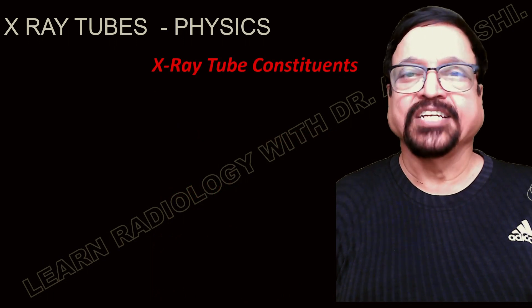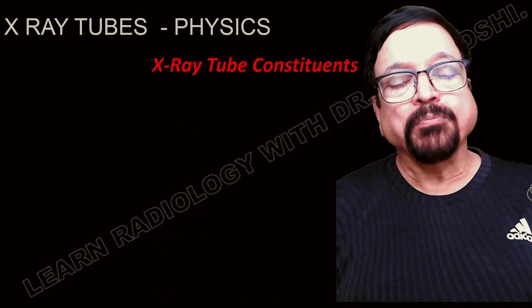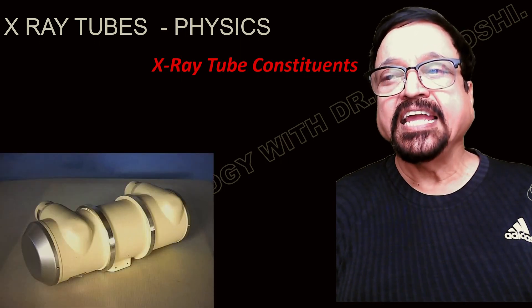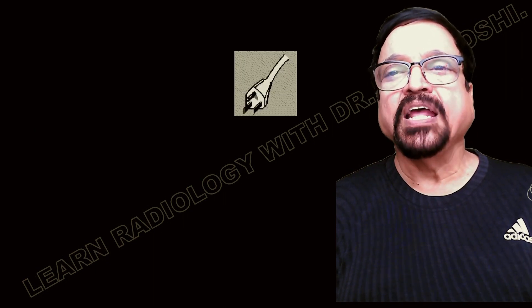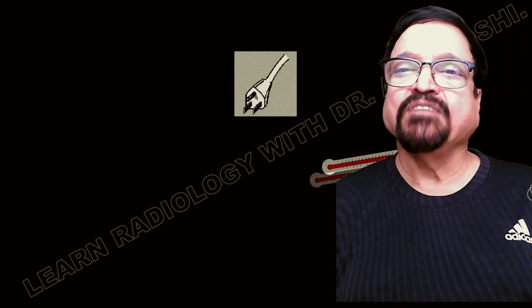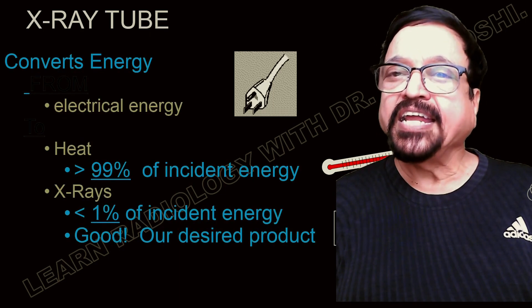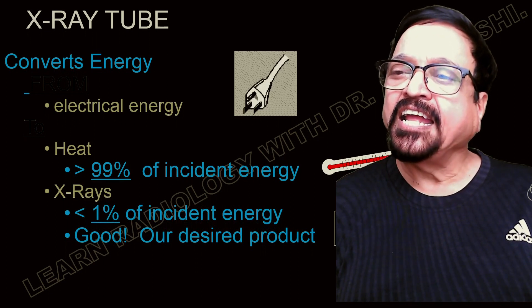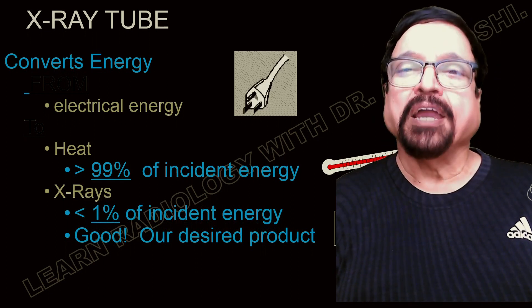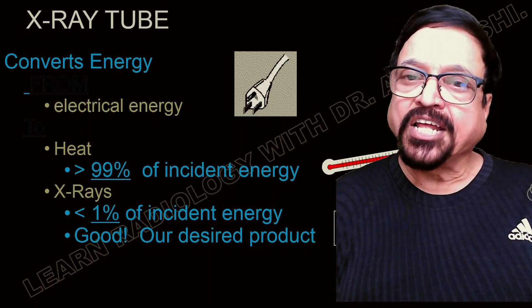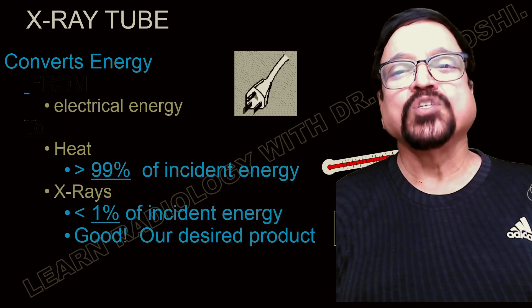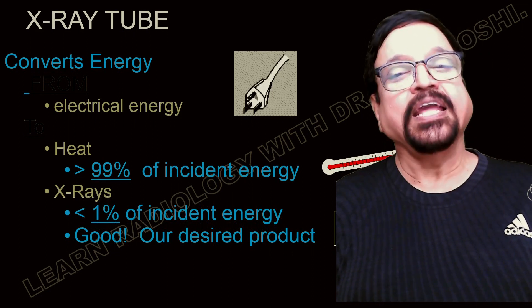Today's topic is the X-ray tube, and more particularly the anode. X-ray tubes consist of rotating anode and stationary anode types, but today's topic is only the rotating anode. What are the components of an X-ray tube? It basically converts electrical energy into radiation by using thermionic emission, then accelerating the electrons, then decelerating them, and converting them into X-rays.